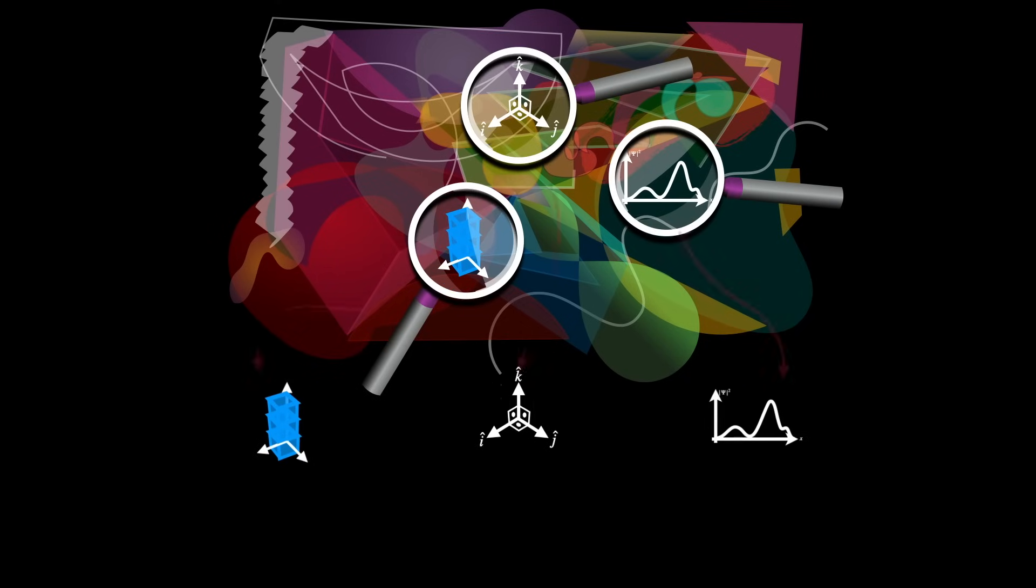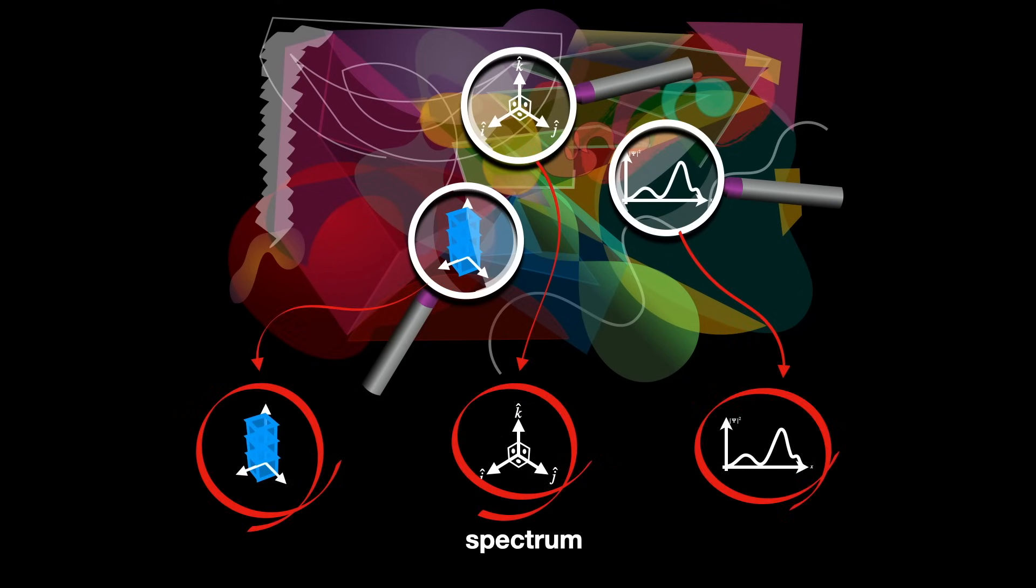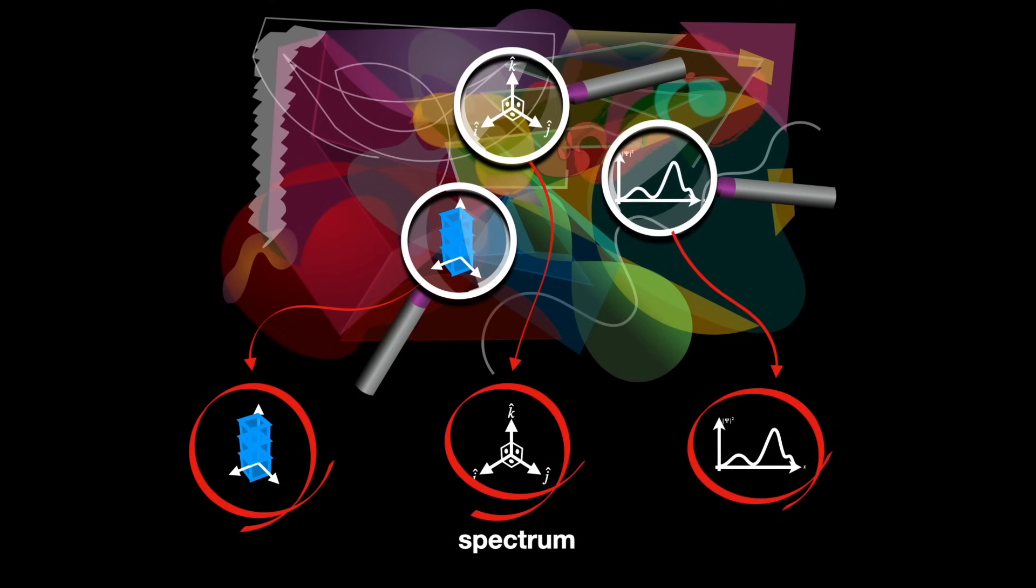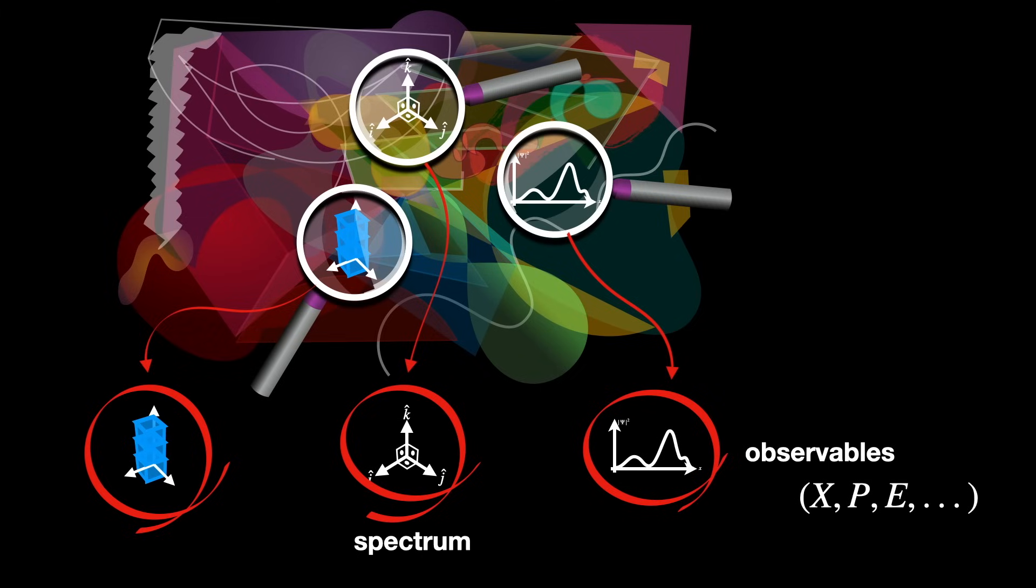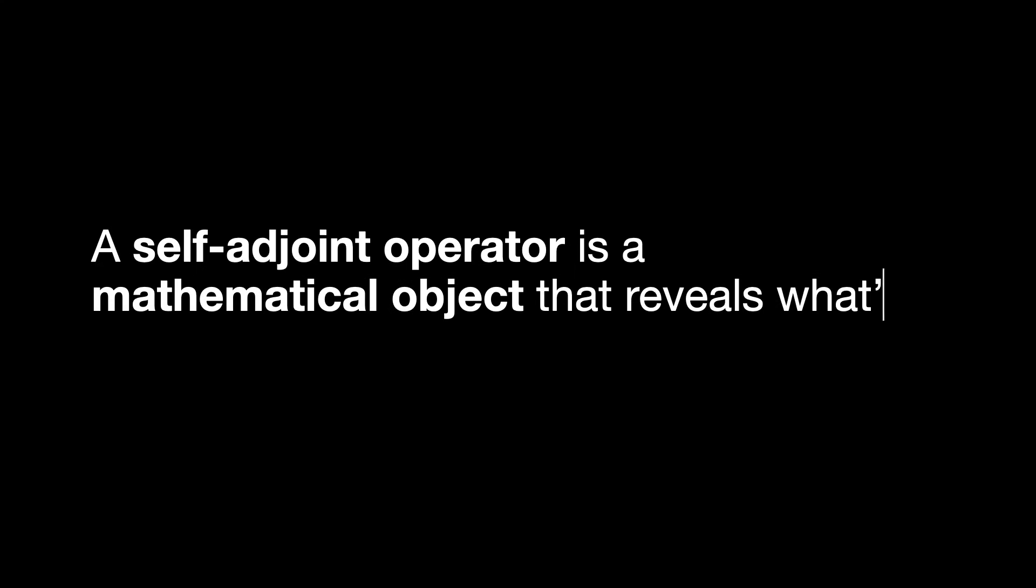This lens is the self-adjoint operator, and what you see is the spectrum. Going back to quantum mechanics, which is just to help us grasp the intuition and then go back to pure math, we call the structure observables, because these are the things we can measure in our limited physical world. In other words, a self-adjoint operator is a mathematical object that reveals what's observable about a Hilbert space.